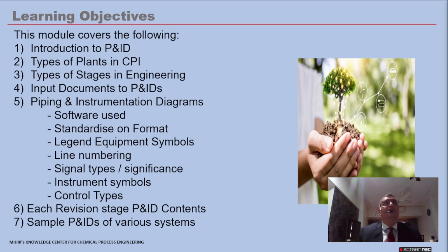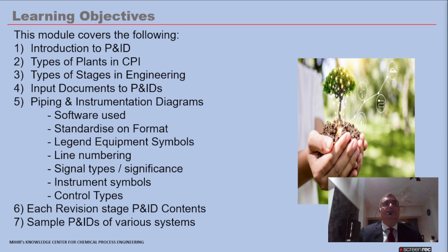The learning objectives of this module cover: introduction to P&IDs, types of plants in the chemical process industry, types of stages in engineering, input documents, and details of P&IDs. In the sample P&IDs covered in Part Three, each and every type of P&ID — for example, a column P&ID — will be explained in detail so the engineer can use that knowledge for future reference.